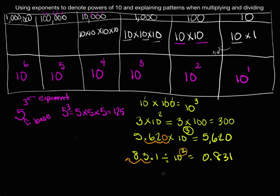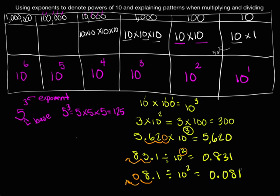Let's try one more: divide 8.1 by 10 squared. Because it's division, the digits shift to the right and the decimal shifts to the left. Since it's 10 squared, we shift two place values, adding a zero as needed, and we end up with 0.081. It's important that students not only understand what exponents are, but that they can use them and explain them when doing so.